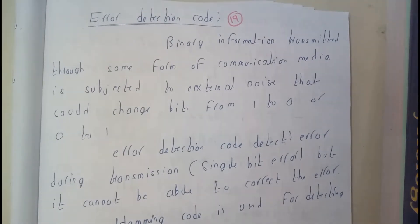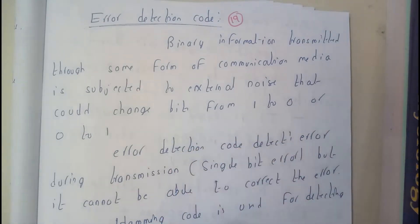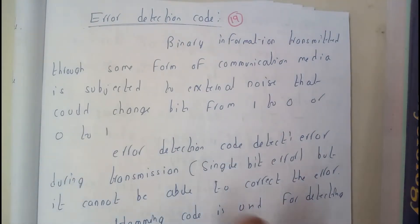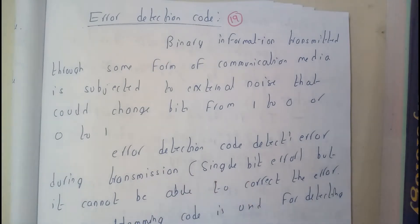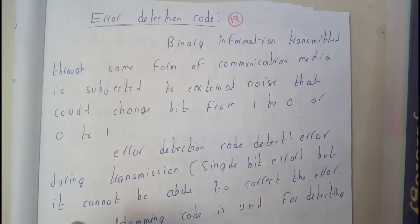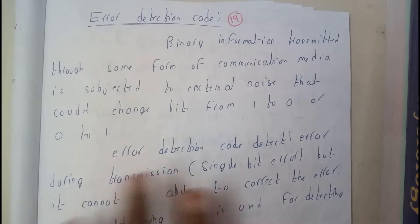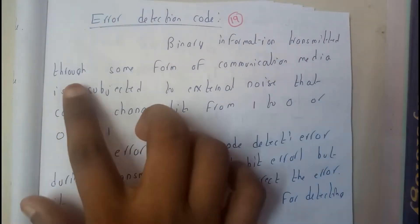Basically, when we are transmitting data in computers, the data will be only in binary — that is nothing but zeros and ones. So even a single bit of zero changed to one, or one changed to zero, the whole message will be corrupted or it's going to be a waste.